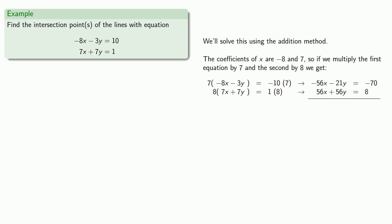And now the coefficients of x are equal but opposite. So if we add the two equations, we get... And so we can solve for y by dividing by the coefficient, 35. And so our solution is y = -62/35.